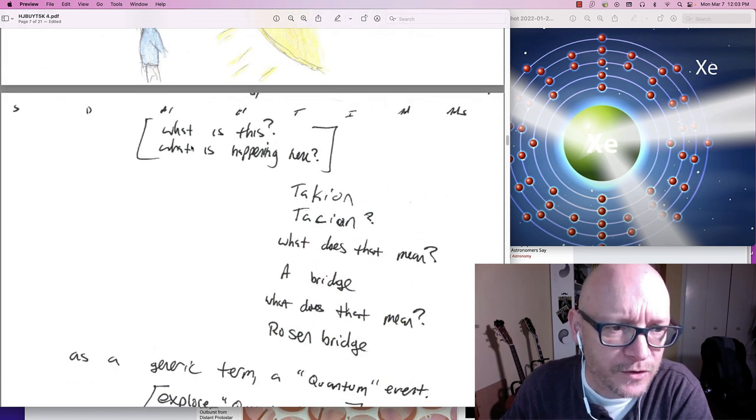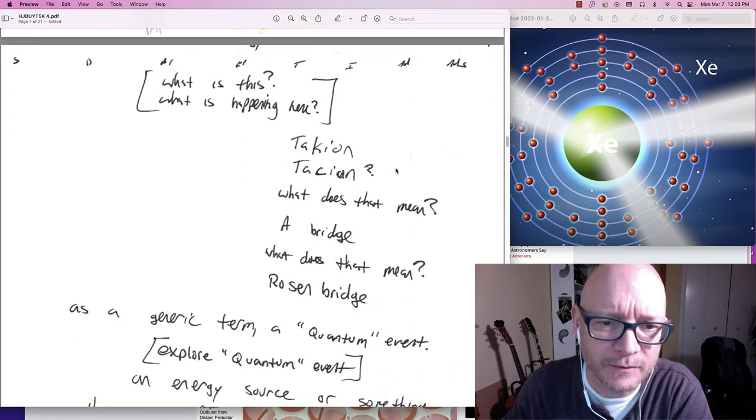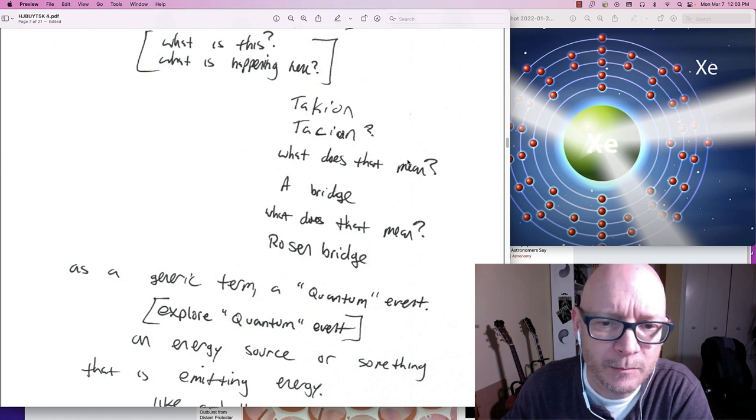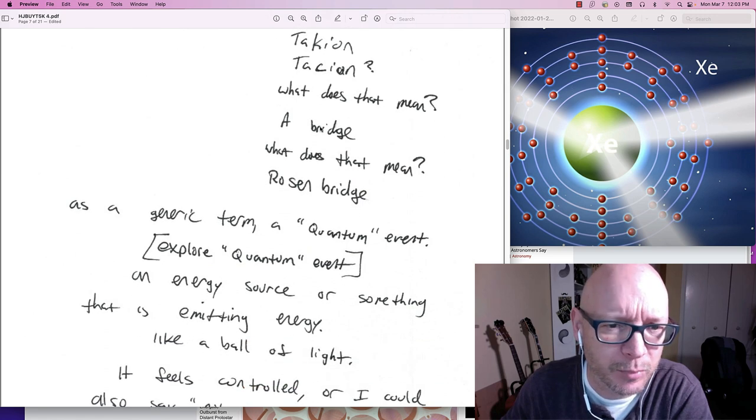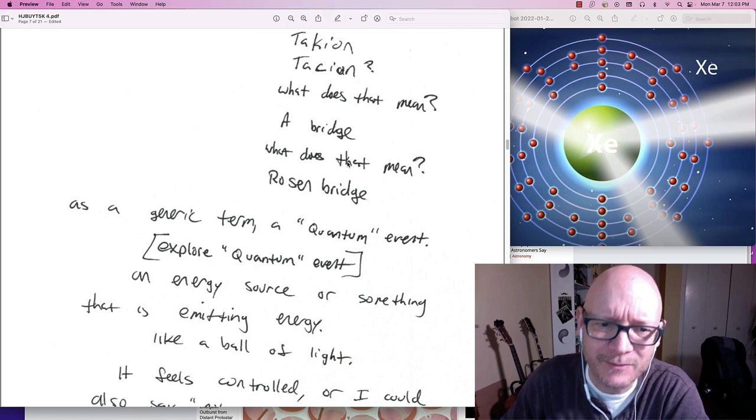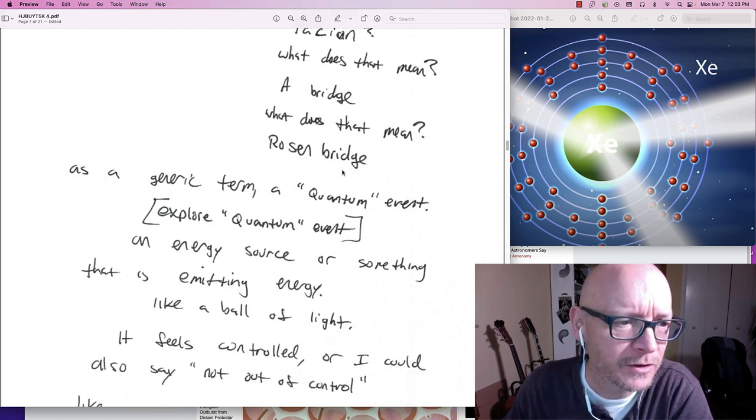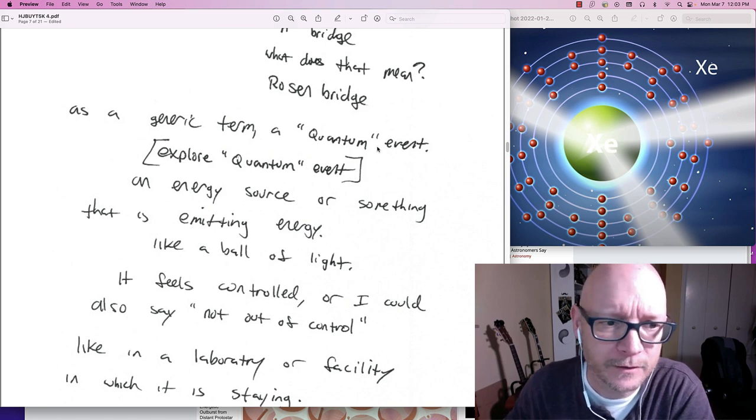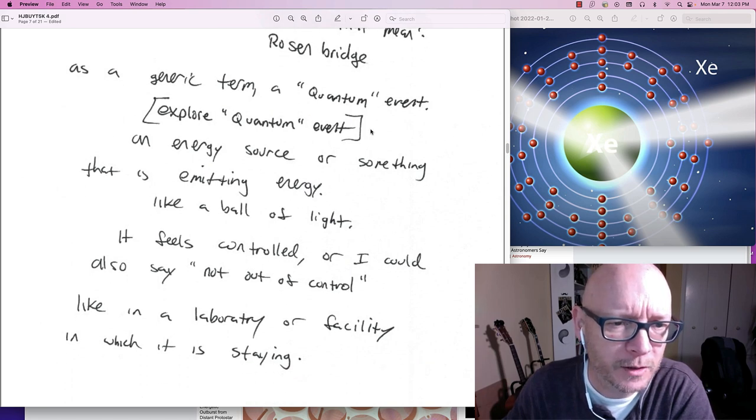But what is this? What is happening? I ponder. Is it some kind of tachyon thing? A generic term for me. But what does that mean? I wonder. A bridge? What does that even mean? A Rosen bridge? As a generic term. A quantum event. Explore a quantum event. Was my movement to myself.